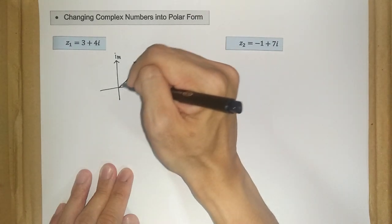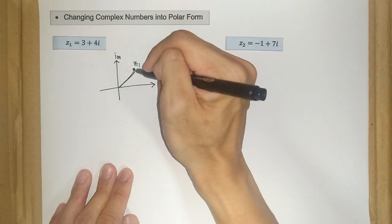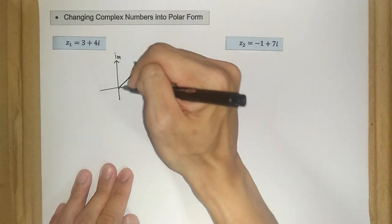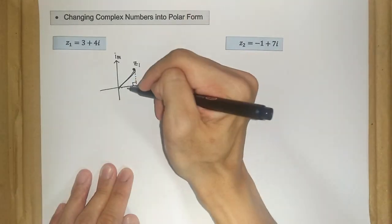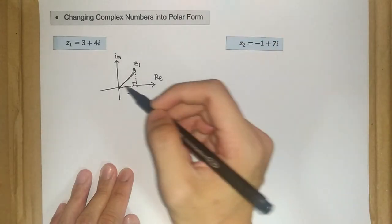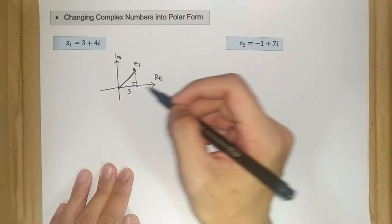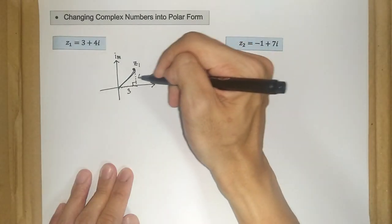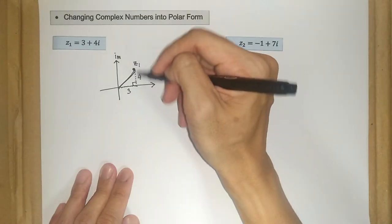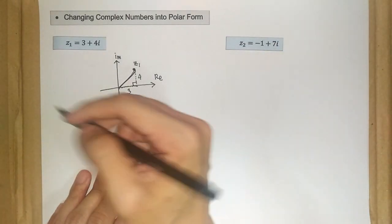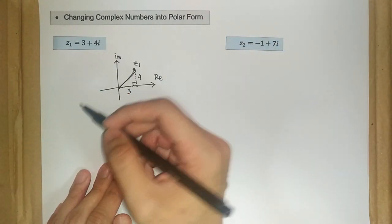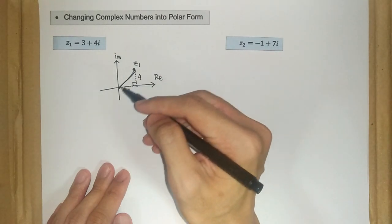So by looking at this perspective, we have our right angle triangle here with 3 units on the horizontal axis and 4 units for the imaginary or the vertical part. So now, let's calculate the r or the modulus of z.